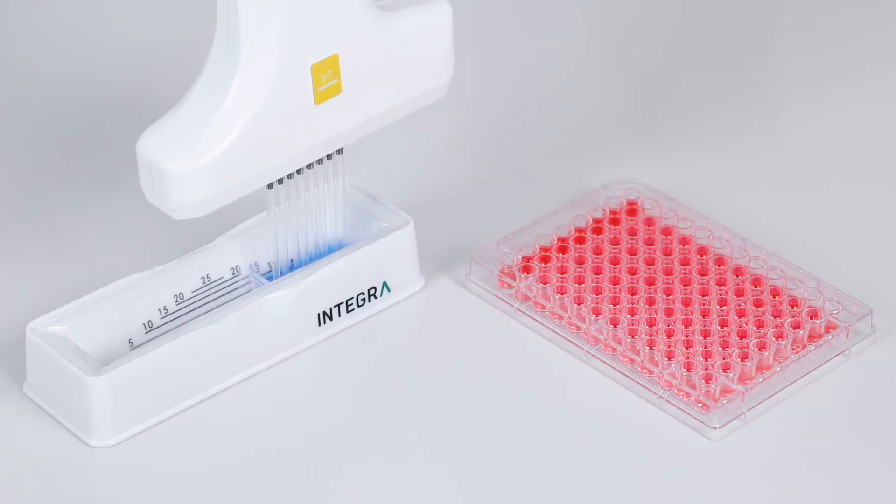Pipetting out of the 5 ml trough using a Voyager adjustable tip spacing pipette further reduces dead volume.